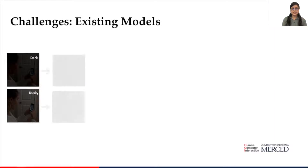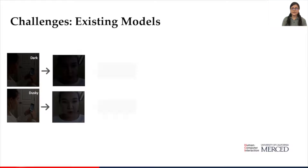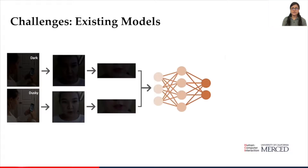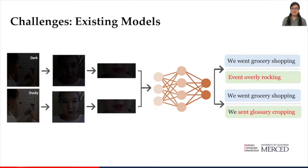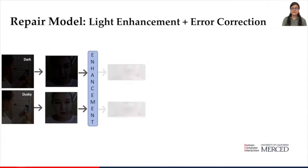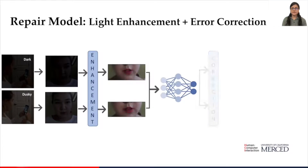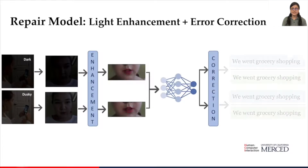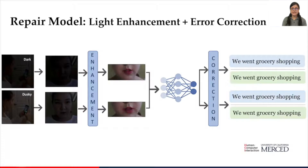In further investigation, we identified two common problems with image-based lip-reading models. First, they do not perform well under poor lighting conditions, and second, they make various lexical and linguistic errors. Thus, we developed an independent repair model that compensates for poor lighting conditions and corrects potential errors in the output using a custom language model.